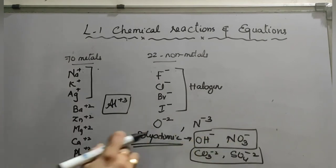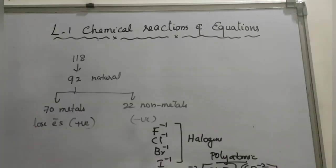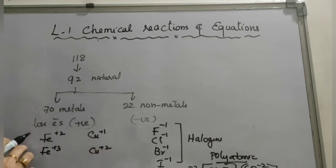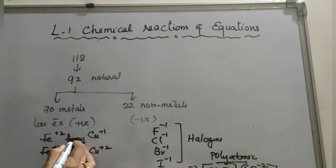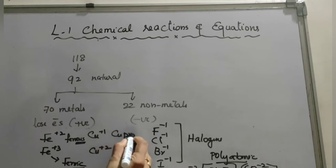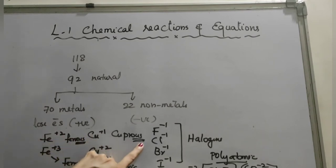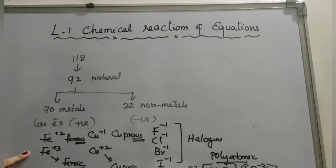Iron (Fe) shows two ionic states: plus two and plus three. Copper also shows two ionic states: plus one and plus two. Plus two iron is called ferrous (Fe²⁺) and plus three iron is called ferric (Fe³⁺). For copper: plus one is cuprous and plus two is cupric. The lower ionic state carries the suffix '-ous' and the higher one carries '-ic'.